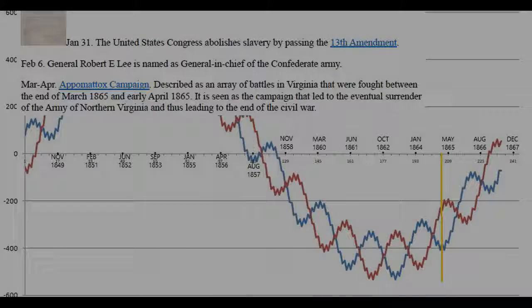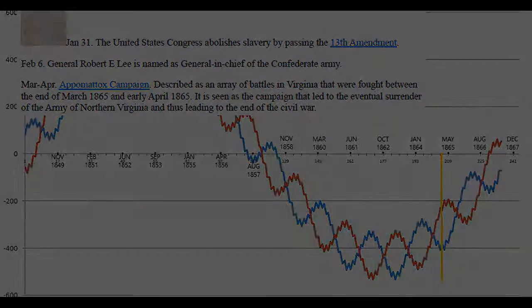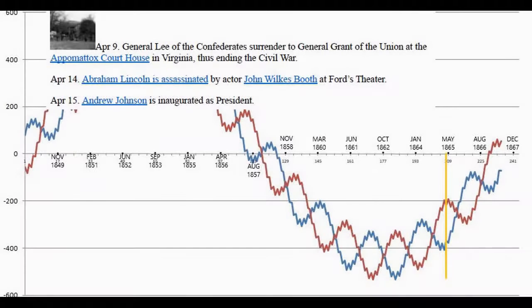On January 31st, 1865, the US Congress abolishes slavery by passing the 13th Amendment. On February 6th, General Robert E. Lee is named General-in-Chief of the Confederate Army. In March–April, the Appomattox Campaign — an array of battles in Virginia — is seen as the campaign leading to the surrender of the Army of Northern Virginia. On April 9th, 1865, General Lee surrenders to General Grant at the Appomattox Court House in Virginia, ending the Civil War.